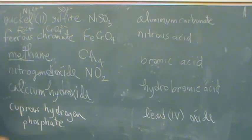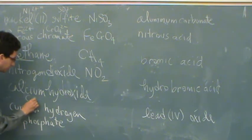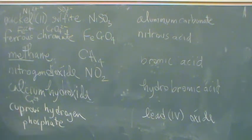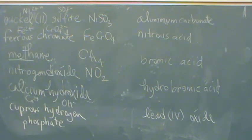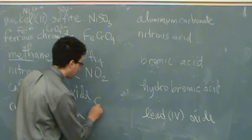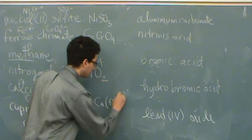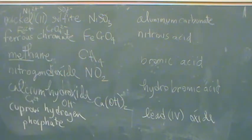Okay, calcium hydroxide. Calcium is Ca 2+, hydroxide OH -1. So I need two OHs to balance this one. Ca(OH)2. There's calcium hydroxide.